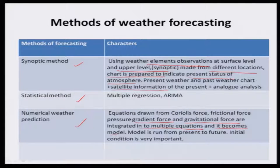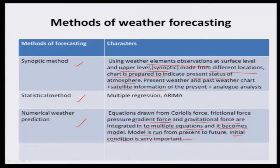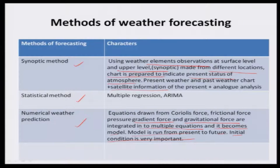This numerical weather prediction model is very cumbersome and precise. The model is run from the present to the future, so the initial condition is very, very important. Unless you put the initial condition — what is happening today — it is impossible to go to the future. As an example from home: without any foundation, you cannot build any castle or building. So initial condition is very, very important. These are the methods used to develop weather forecasts.